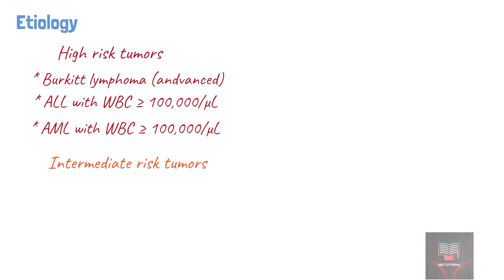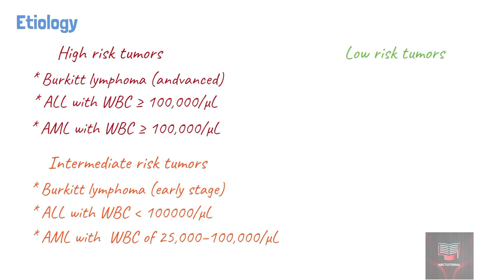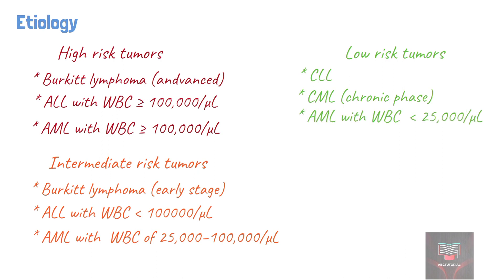Intermediate risk malignancies include early stage Burkitt lymphoma, ALL with WBC less than 100,000 cells per microliter, and AML with WBC between 25,000 to 100,000 cells per microliter. Low risk malignancies for tumor lysis syndrome include chronic lymphocytic leukemia (CLL), chronic myeloid leukemia (CML) in the chronic phase, AML with WBC less than 25,000, multiple myeloma, and solid cancers.